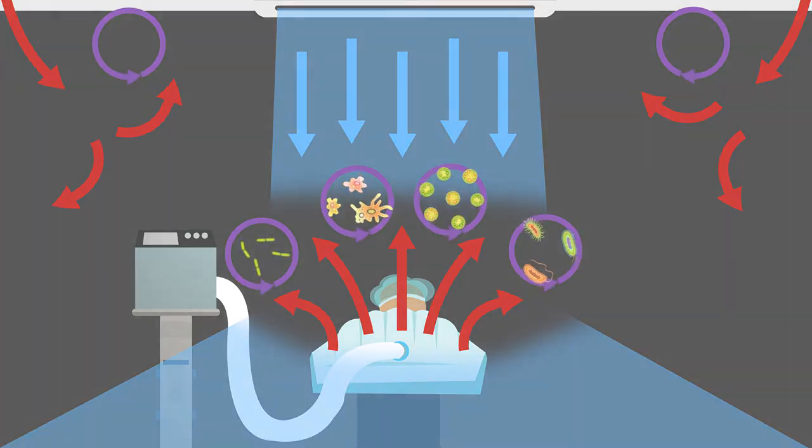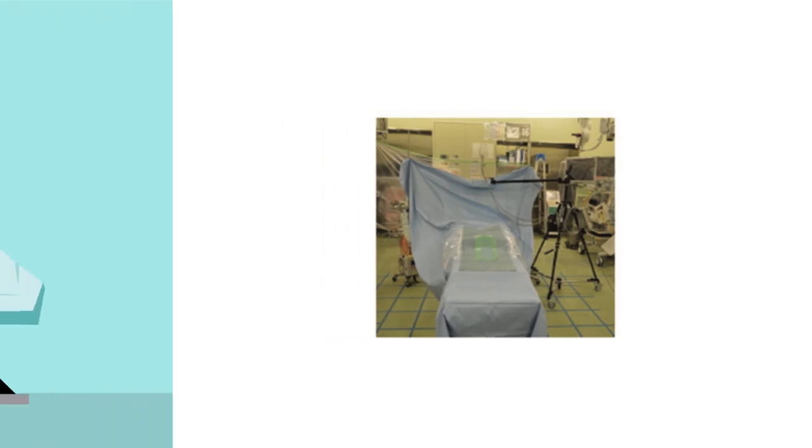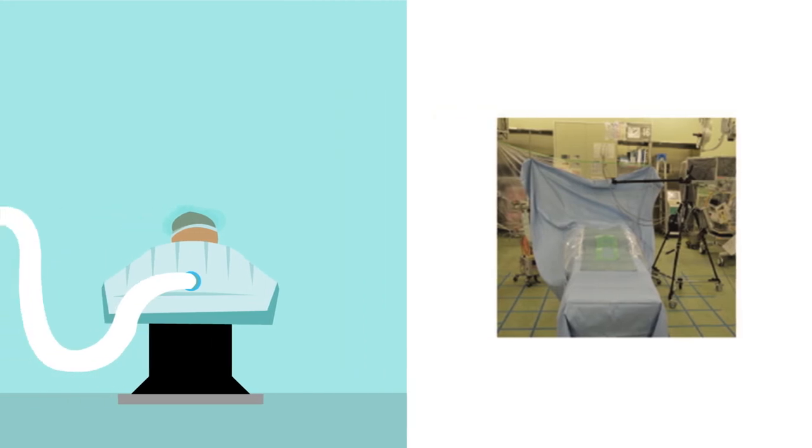To determine how forced air warming changes the airflow in the operating room, a mannequin was placed on an operating table and covered with a surgical drape. Either an upper body or lower body warming blanket was placed on the mannequin to mimic different types of surgery. These blankets inflate like a balloon when the attached heating device is turned on.